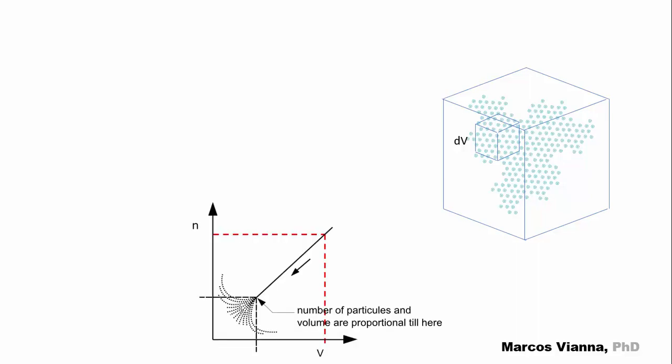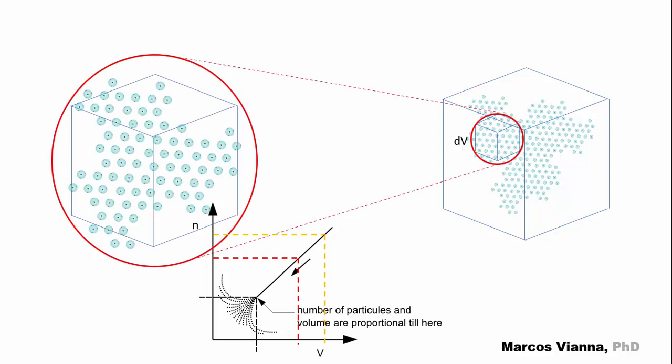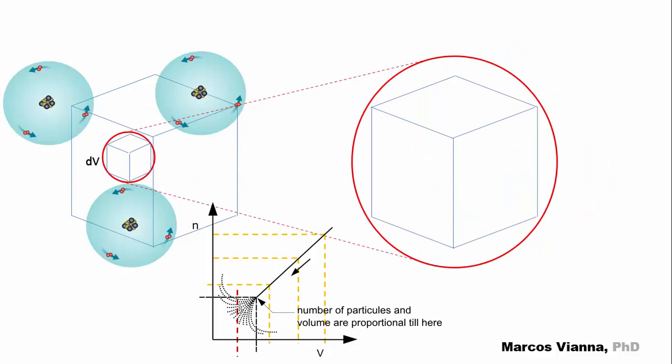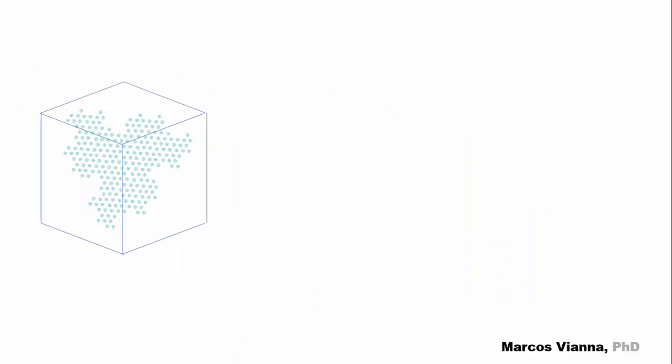So, the elementary volume must have the properties that we wish to extrapolate. Well, I'm afraid that will run into a problem here. For example, when we consider the number of particles which are present in this volume, there will be a linear proportion between them. But, as the volume is becoming smaller, this proportion tends to disappear until it becomes random or inexistent.